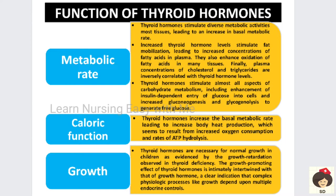Thyroid hormones also help in metabolism of carbohydrates and assist in the insulin-dependent entry of glucose into cells, resulting in increased glycogenesis and glycogenolysis. Glycogenesis is the formation of glucose and glycogenolysis is the breakdown of glycogen, thereby helping in the production of more glucose in the blood.